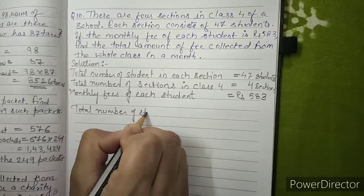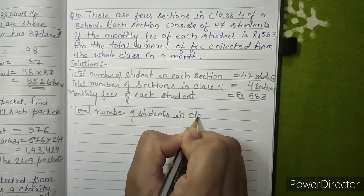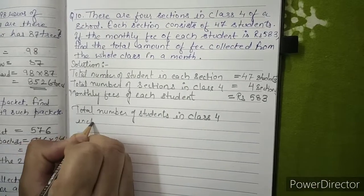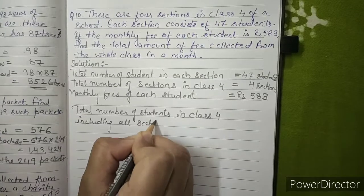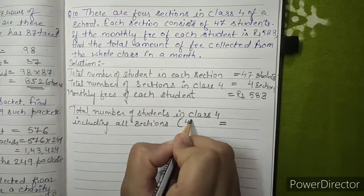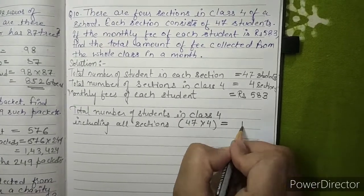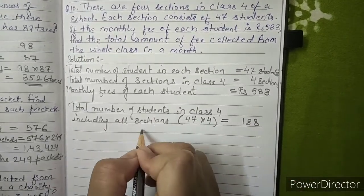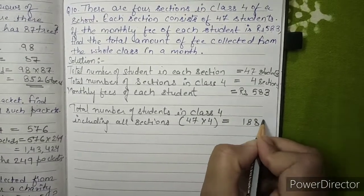So in all sections equals 47 into 4. After multiplying 47 into 4 we got 188. Total number of students in Class 4 including all sections is 188 students.